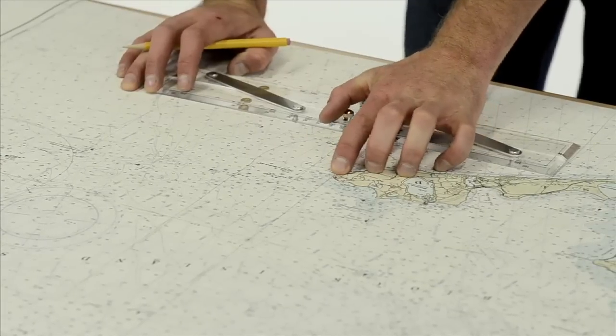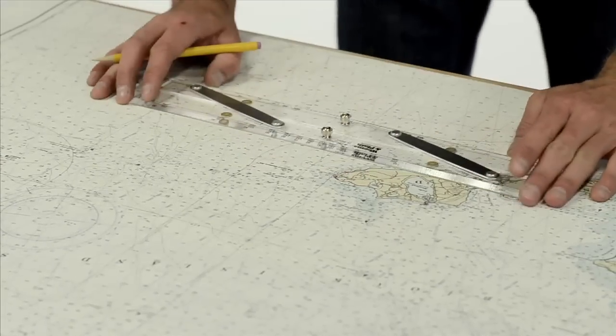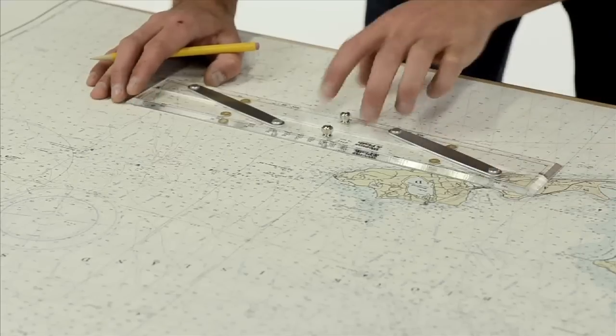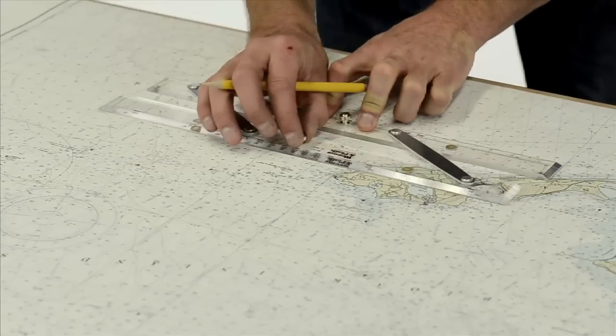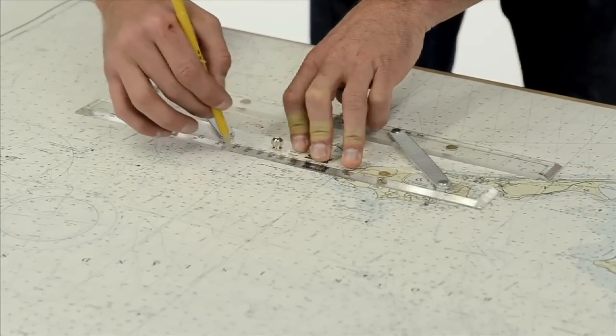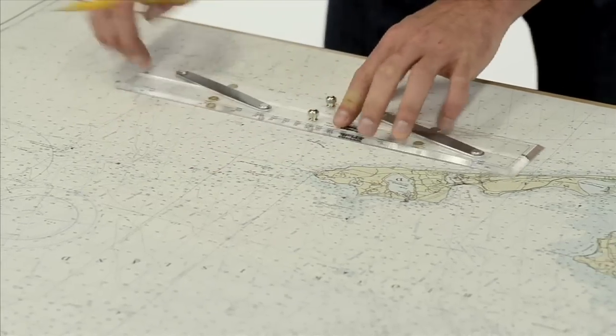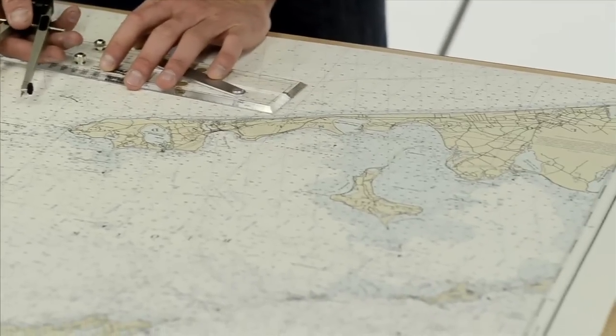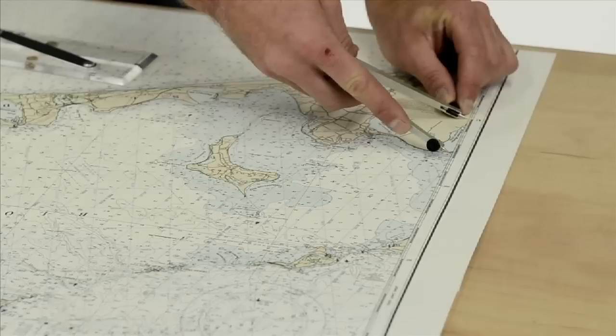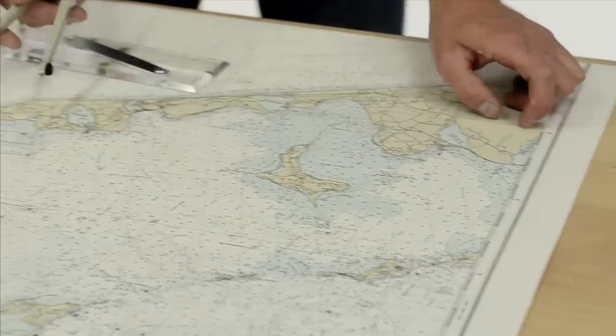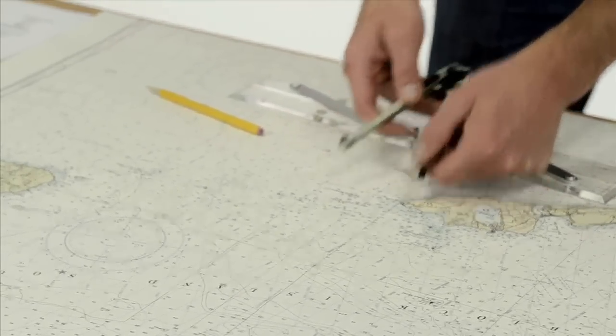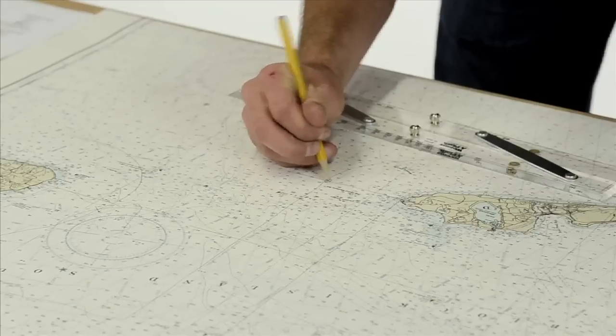Here's Montauk point light. We need to be three miles due east. So we line our parallel rules up on a parallel, east to west, and we walk up to Montauk point light. We strike a line at least three nautical miles long. Now we take our dividers, we go to our latitude scale, we get three nautical miles off of our latitude scale, we come back, and we put it at Montauk point light and we mark it. This is our starting position.